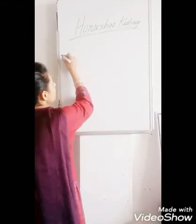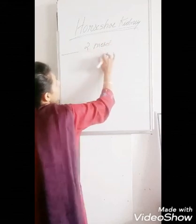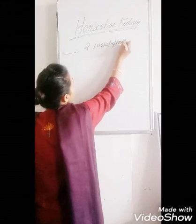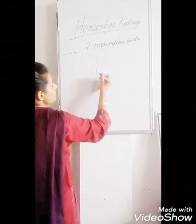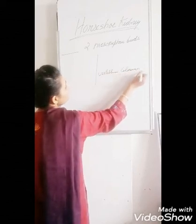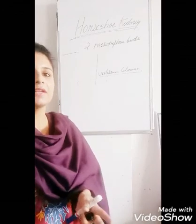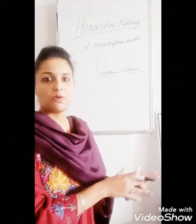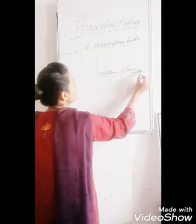During the prenatal life, during the development inside the mother's womb, two mesonephric buds are formed on either side of the vertebral column — one on the left and one on the right. So two mesonephric buds are formed along the sides of the future vertebral column.